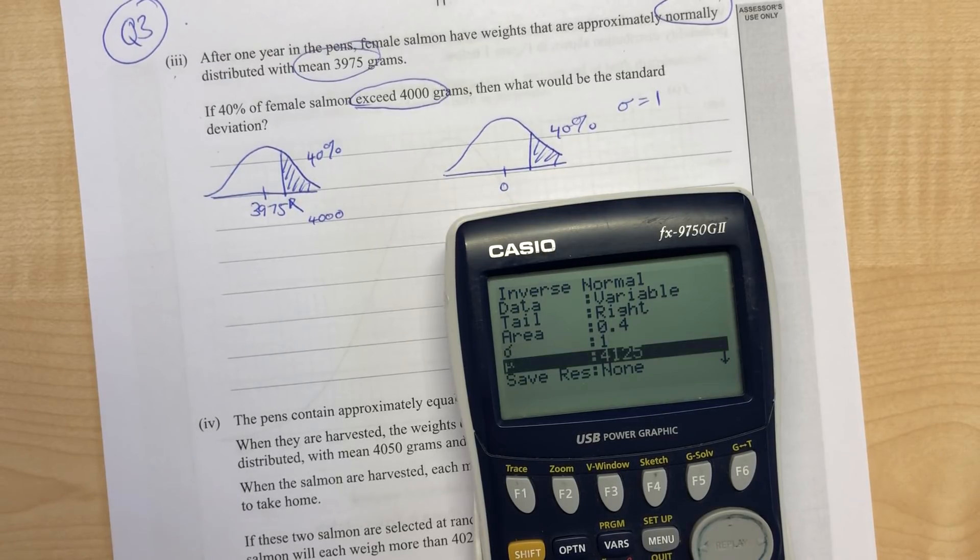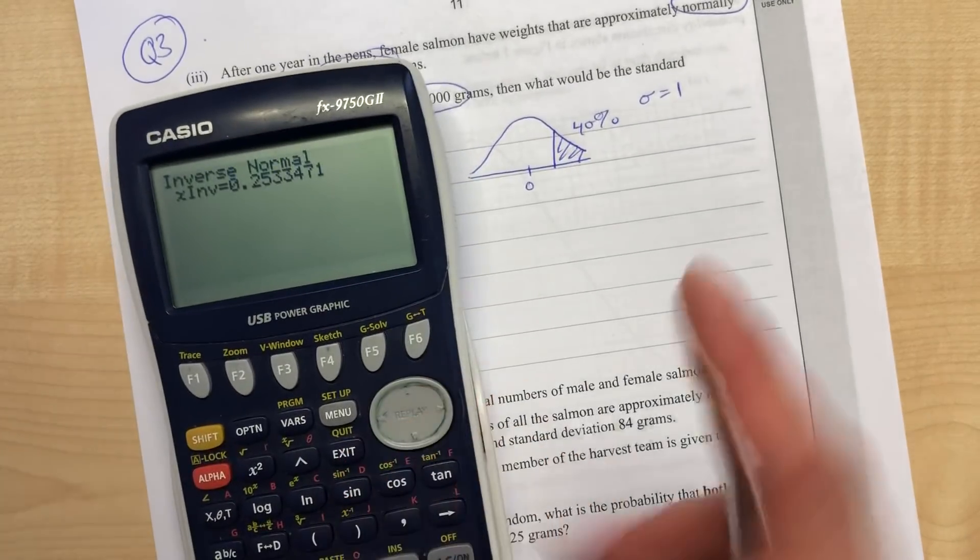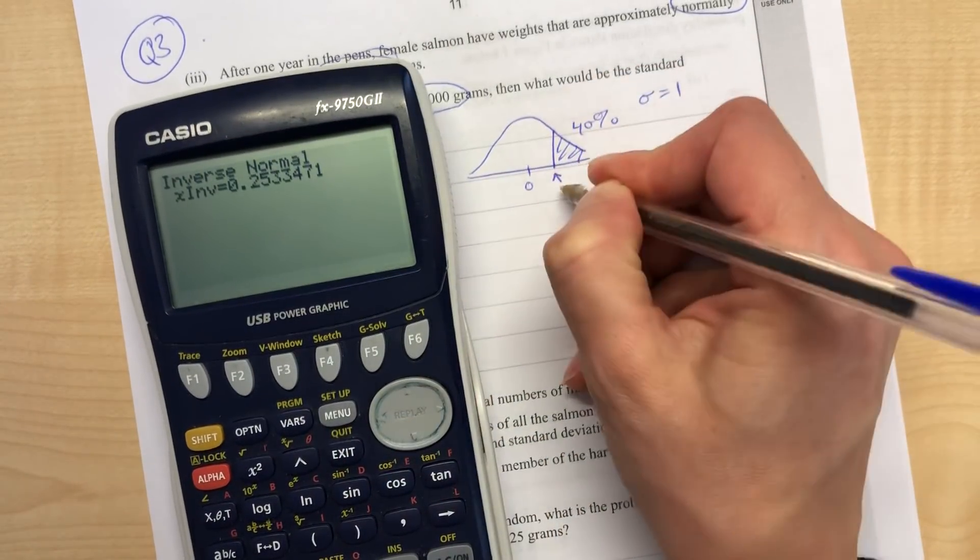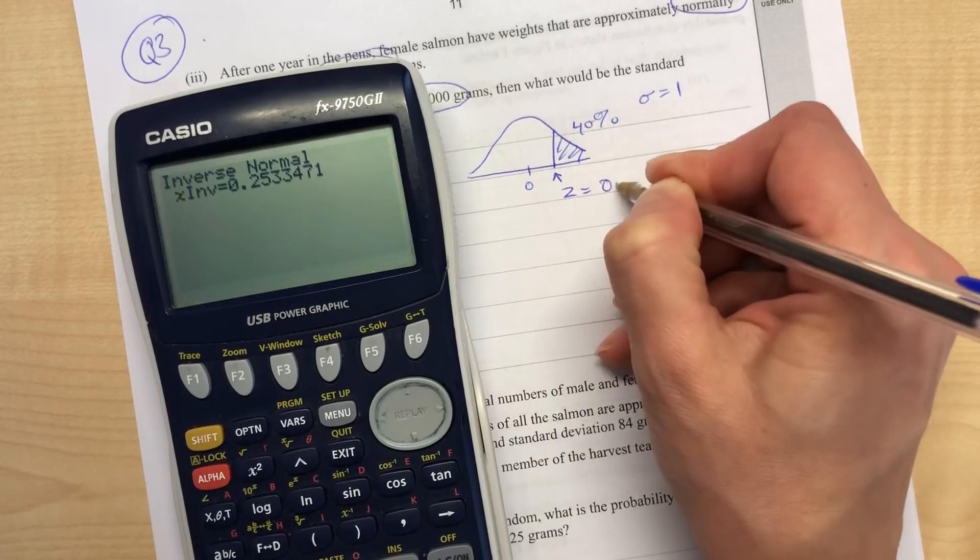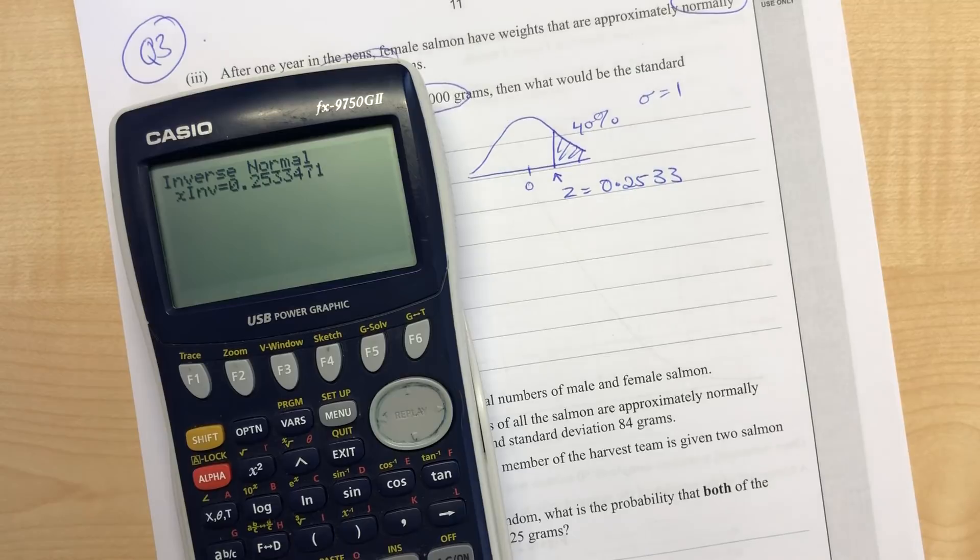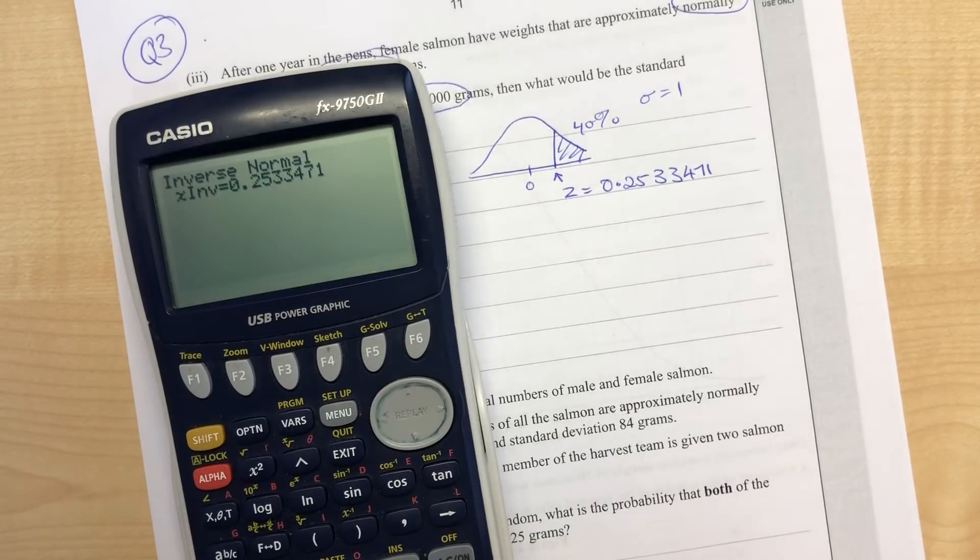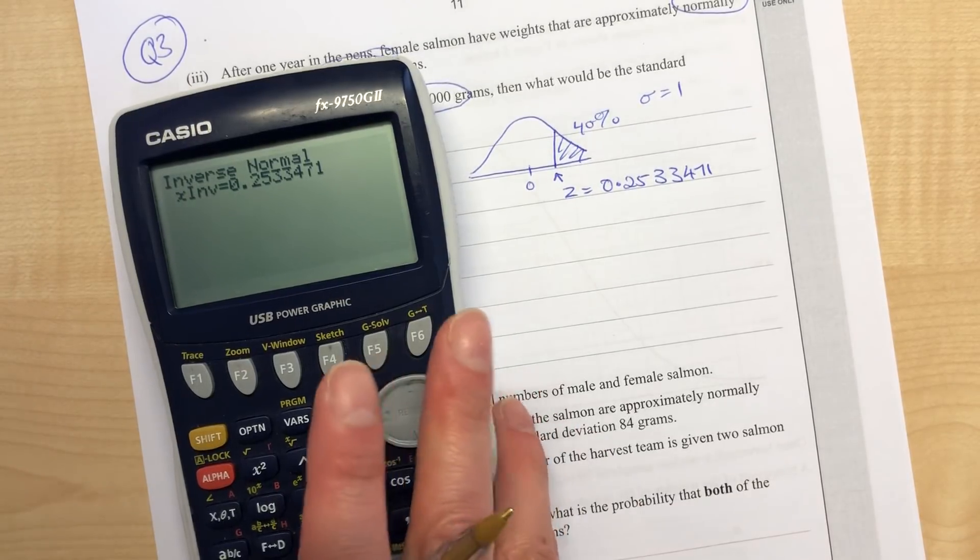This time we have a right tail with an area of 0.4. Sigma is 1, mean is 0. That gives us the z number of 0.2533. I'm just going to write in all of the decimals because we don't want to accidentally round too early.